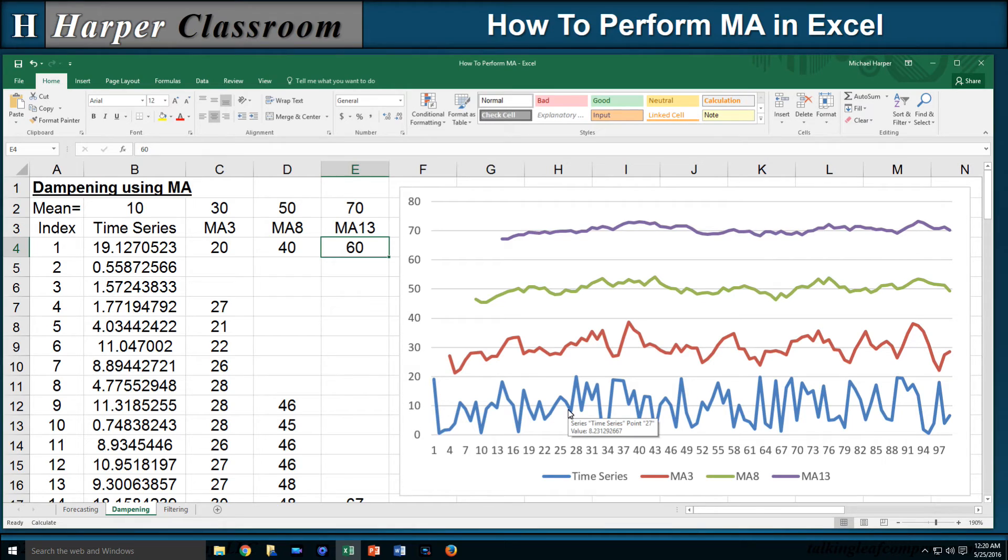You can see, as my moving average window changes from 3 to 8 to 13, the variability decreases, the volatility decreases, the magnitude of the random component decreases, and that illustrates dampening.